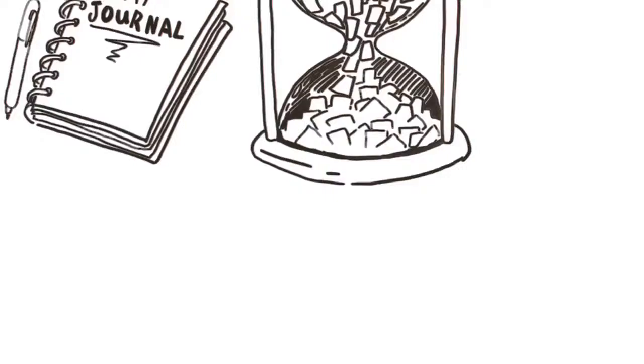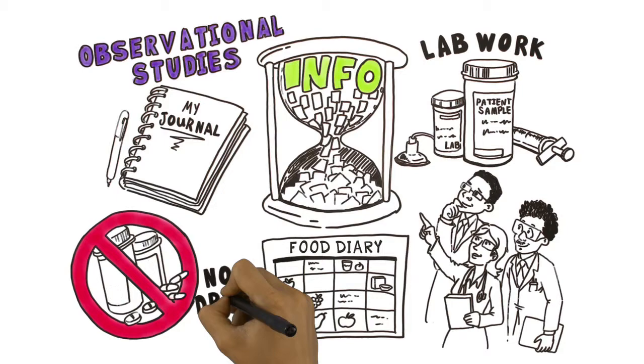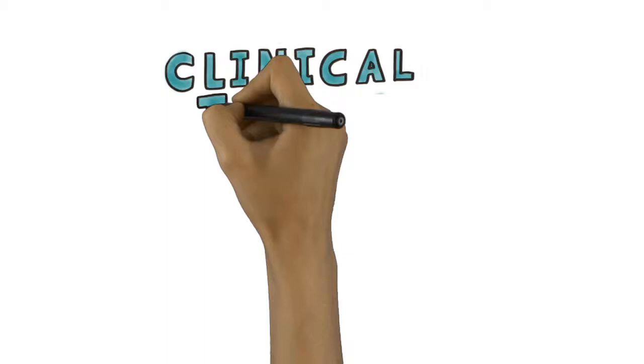In observational studies, information is collected over time. You might keep a journal, maintain a food diary, or have lab work done. This helps researchers understand how the disease progresses and how to stop or delay it. In observational studies, there is no attempt to alter the disease progression, and you do not take a drug.